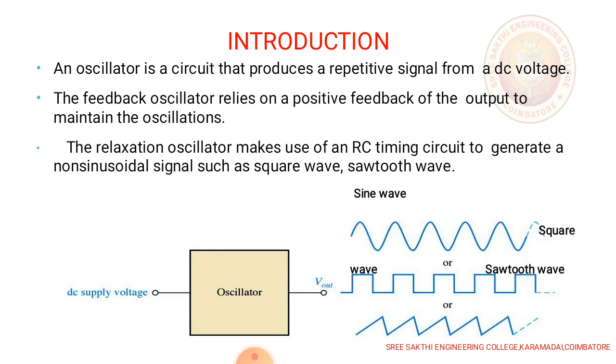An oscillator is a circuit which produces a repetitive signal from a DC voltage. The feedback oscillator gives a positive feedback of the output to maintain the oscillation. The relaxation oscillator makes use of the RC timing circuit to generate a non-sinusoidal signal such as square wave, sawtooth wave, etc.